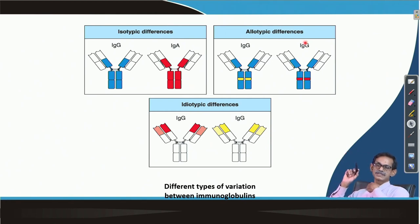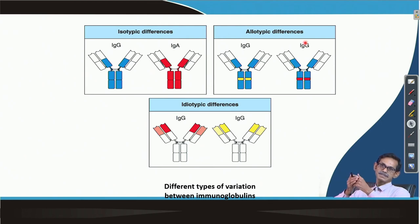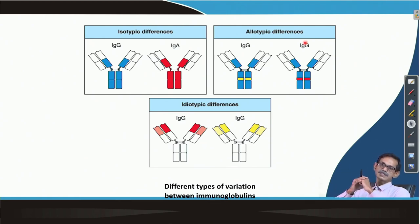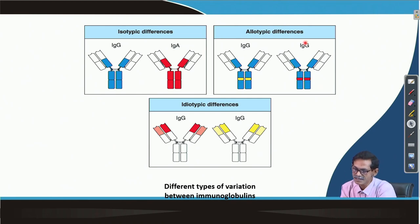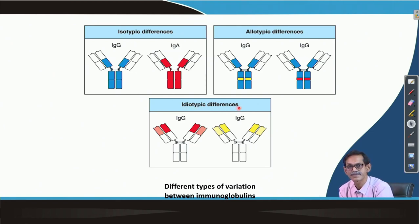When both isotopes are IgG but the sequence is slightly different due to different alleles, this type of difference is called allotypic difference. My IgG and your IgG are both IgG, but if you compare the sequences they will not be 100% matching — that is allotypic difference. The third difference, very important to understand, is called idiotypic difference.